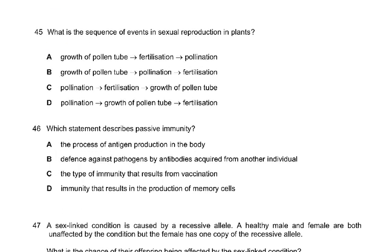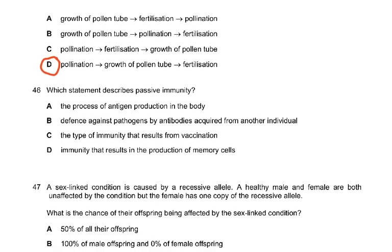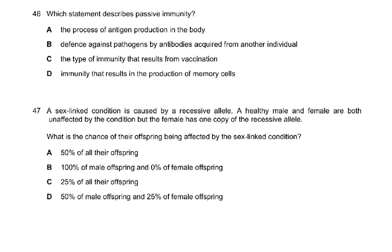Question 45: what is the sequence of events in sexual reproduction in plants? The three processes are pollination, growth of the pollen tube, and fertilization. Pollination must come first, then growth of the pollen tube, then fertilization. That is why the answer is D.